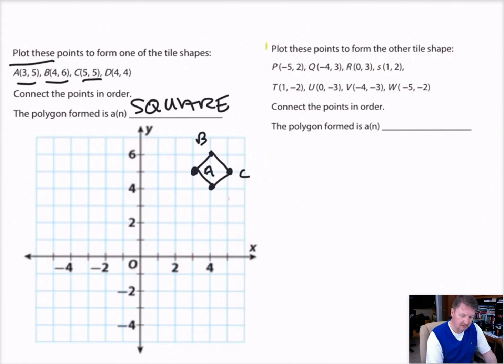Let's plot these next points. It says P is negative 5, 2, so we go to negative 5, and then positive 2, and then that's point P. Q is negative 4, 3. Negative 4, and then 3 is right there. So that's Q. R is 0, 3, 0, and then up to 3 right here. This is R. S is 1, 2. So 1, 2 would be S.